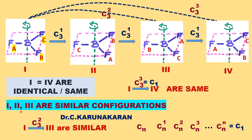Configurations 1, 2, and 3 are similar configurations, not identical or not the same configuration. Here A is there, C is there, B is there. Therefore 1 and 4 are the same configuration.